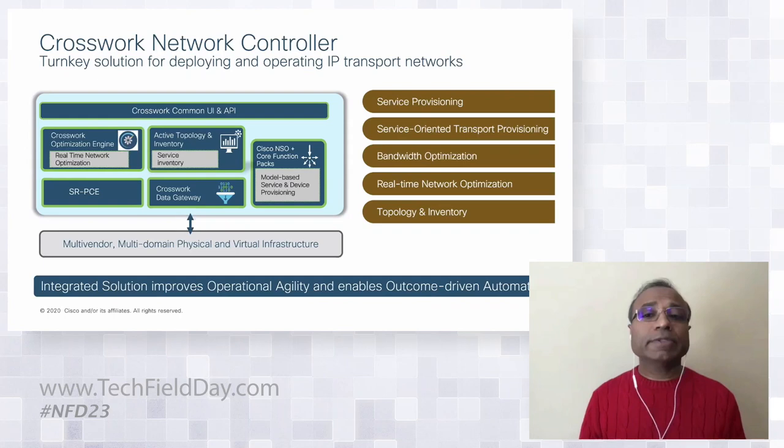The SRTE core function pack helps configure SRTE policies and instantiate data services. The sample function packs for L2 and L3 VPN give you the ability to extend and customize based on specific customer needs. You can provision SRTE policies associated with the service, implement bandwidth optimization where the controller does tactical network optimization during congestion, and implement closed-loop optimization — monitoring metrics like BGP bandwidth utilization and taking proactive steps to mitigate or avoid congestion issues. You can also visualize services and view inventory under the same user interface.